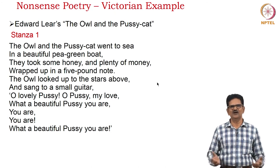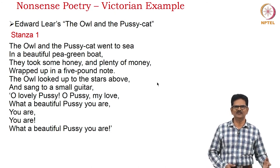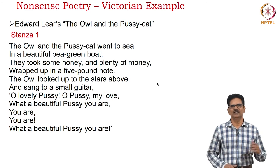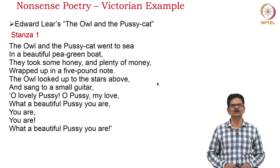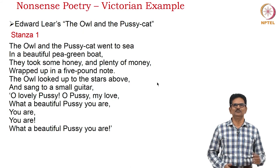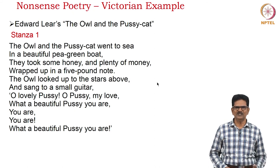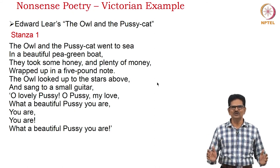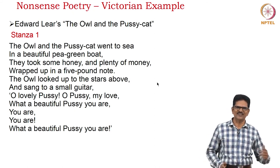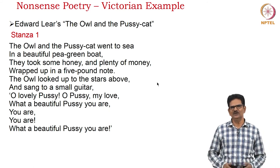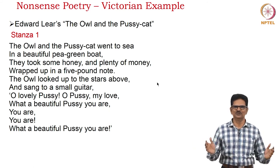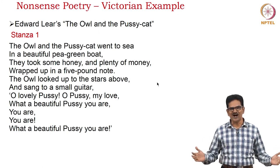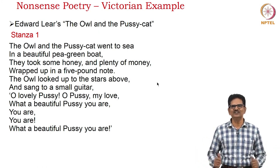We have an example of nonsense poetry from Edward Lear's poem The Owl and the Pussycat, first stanza: 'The owl and the pussycat went to sea in a beautiful pea-green boat. They took some honey and plenty of money wrapped up in a five-pound note. The owl looked up to the stars above and sang to a small guitar. O lovely pussy! O pussy, my love! What a beautiful pussy you are! You are! You are! What a beautiful pussy you are!'